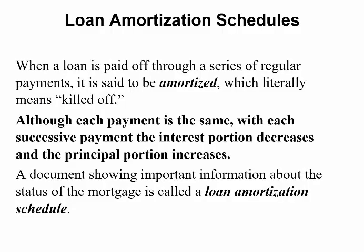Now let's talk about what we call a loan amortization schedule. When a loan is paid off through a series of regular payments, it is said to be amortized, which literally means killed off. Although each payment is the same, with each successive payment the interest portion decreases and the principal portion increases. When you borrow money to purchase a home, the bank actually makes you pay all the interest upfront, and then after a number of years you start paying more towards your principal. A document showing important information about the status of a mortgage is called the loan amortization schedule.